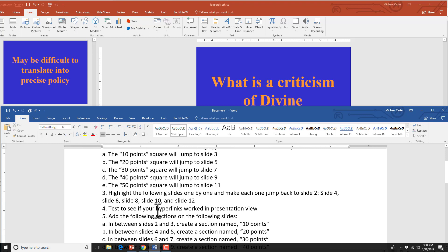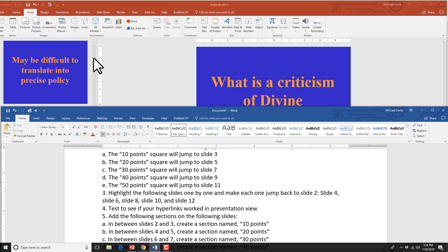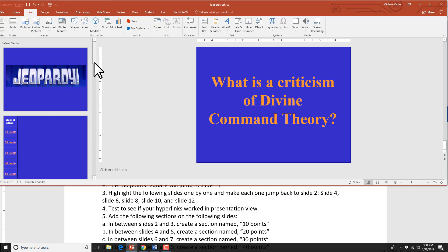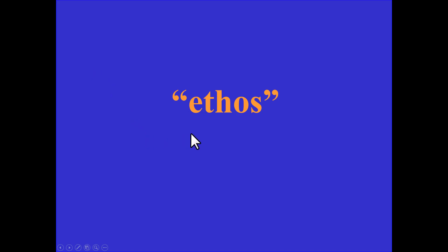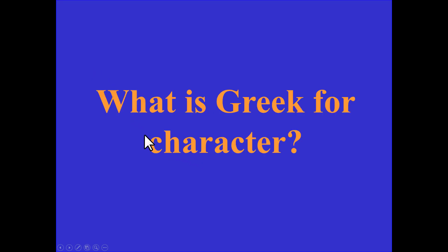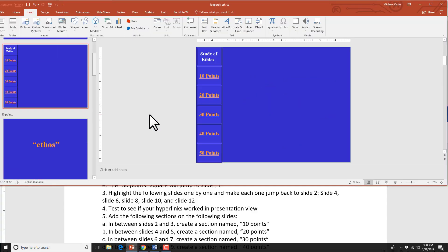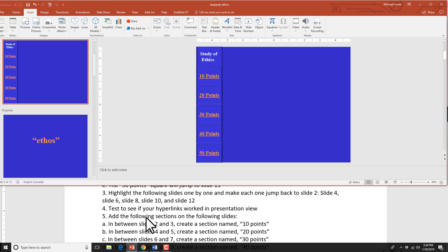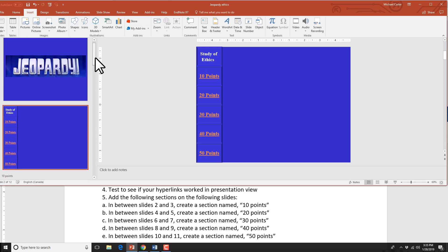To test if your hyperlinks worked, press F5 to start the presentation. Click the 10-point square — it jumps to the Ethos slide. Press the spacebar to reveal the question the participants should have come up with, then click the slide and it goes back to the scoreboard. Press Escape to exit. Now we're going to learn how to add sections to a presentation — useful if you have a two-to-three slide introduction or an activity associated with certain slides, so you can mark where those sections begin.